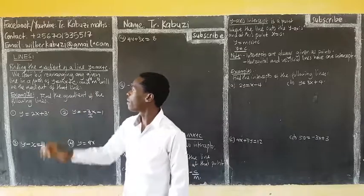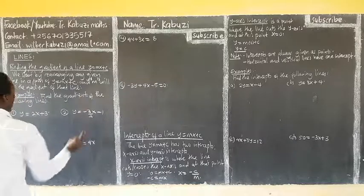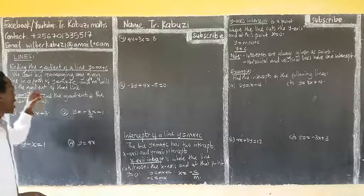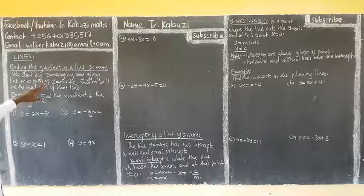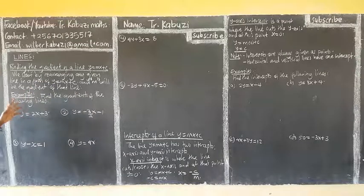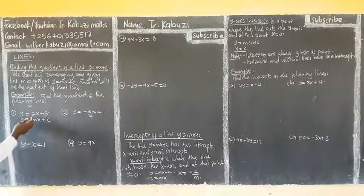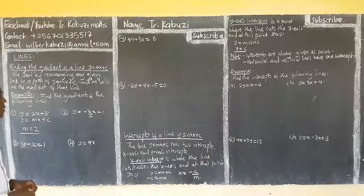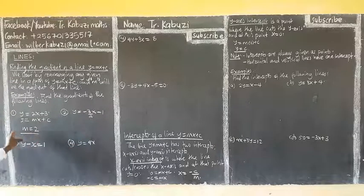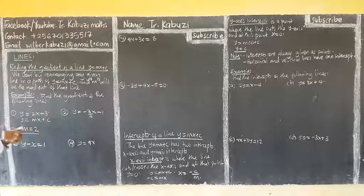Find the gradient of the following lines. When I look at this, I make sure that I first rewrite it into this form, so that the coefficient of y is 1. When I look at this, the coefficient of y is 1, and it's y equal to 2x. So it's already in this form. If we compare now, it means that my gradient is 2. So our gradient is the coefficient of x here, which is m, and the coefficient of x here is 2. So m is 2.